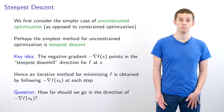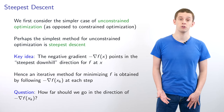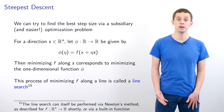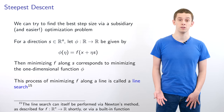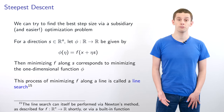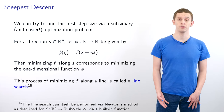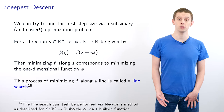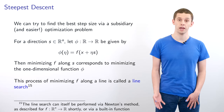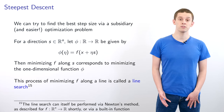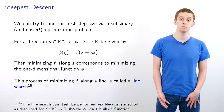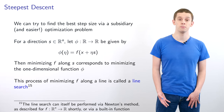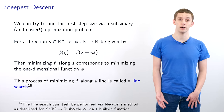This motivates a question: how far should we go in the direction of minus grad f of x_k? We can try to find the best step size by solving a subsidiary and easier optimization problem. For a direction s in R^n, let the function phi from R to R be given by phi of eta equal to f of x plus eta times s. Then minimizing f along s corresponds to minimizing the one-dimensional scalar function phi, and the process of minimizing f along a line is called a line search.